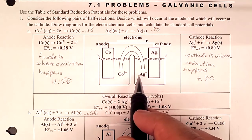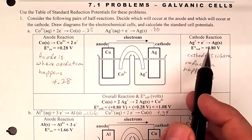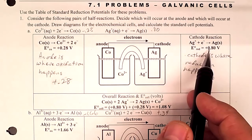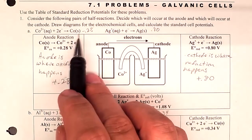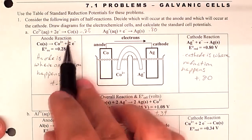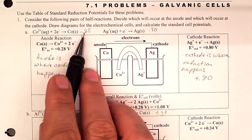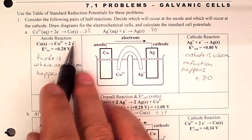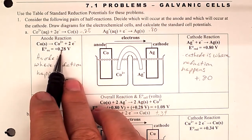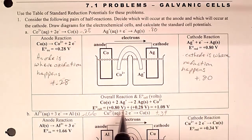One reaction has a negative reduction potential and the other is positive. Since nature wants a positive voltage, we flip the negative one — cobalt — to be the oxidation half-reaction, which changes the sign from negative to positive. Now we have two positive values that add up to the overall standard cell potential.